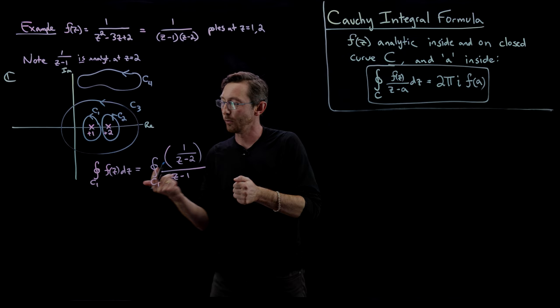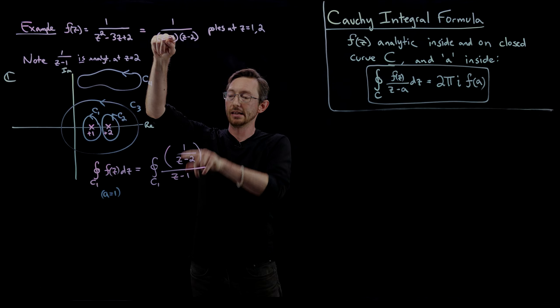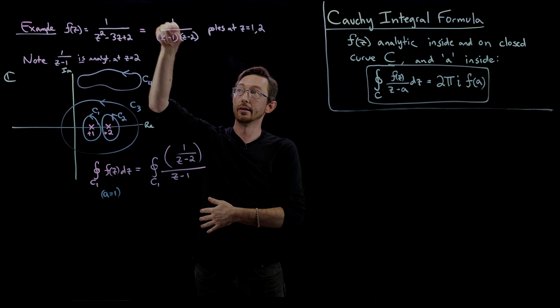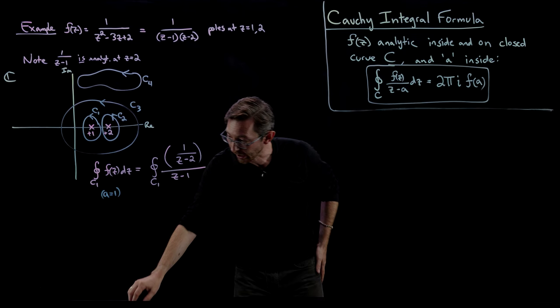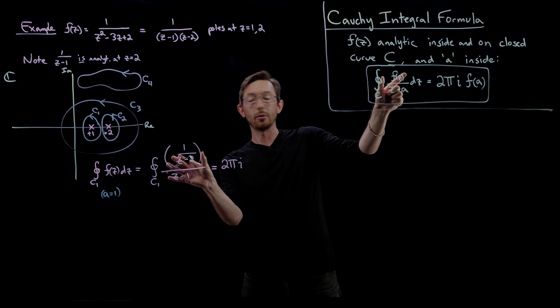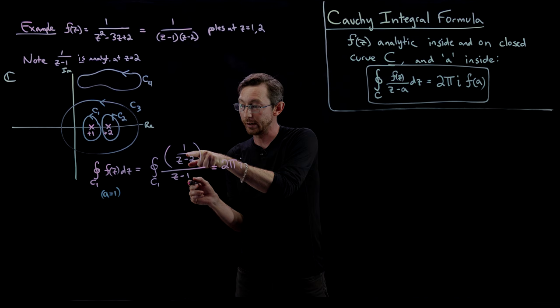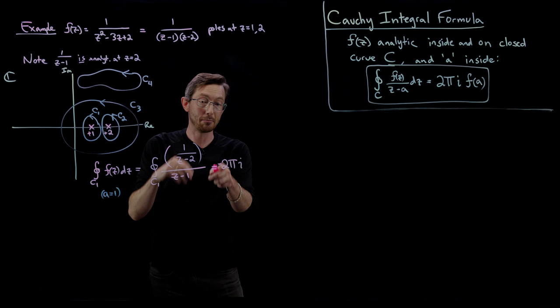So essentially we split this up: one over z minus one gives us the a equals one pole, and the other part of the function, one over z minus two, is analytic near a equals one. When we integrate this up, what pops out is two pi i times this analytic part of the function evaluated at z equals one. If I plug in z equals one, I get one over one minus two, which is one over minus one, which is minus one. So this is minus two pi i. The integral of C1 around this point of this function is minus two pi i.